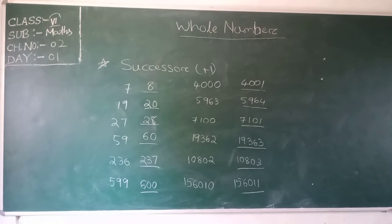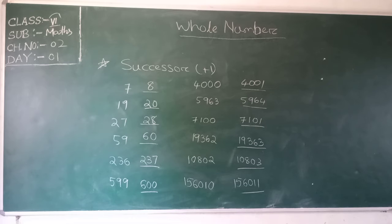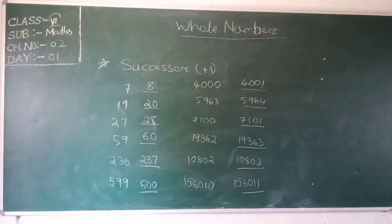The successor of 236 is 236 plus 1 equals 237. Likewise, the successor of 599 is 599 plus 1 equals 600. The successor of 4,000 is 4,001, and the successor of 5,000 is 5,001. Successor of 19,362 is 19,363. Successor of 10,802 is 10,803. Likewise, the successor of 156,010 is 156,011.